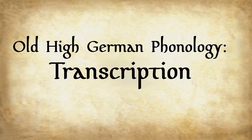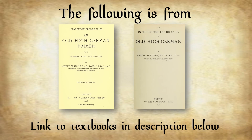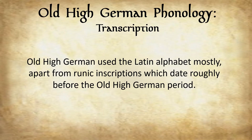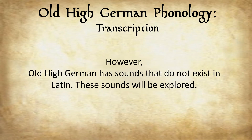Old High German phonology transcription. The following is from 'An Old High German Primer,' second edition by Joseph Wright, and 'An Introduction to the Study of Old High German' by Linel Armitage. Links to these textbooks will be in the description below. Old High German used the Latin alphabet mostly, apart from runic inscriptions from prior to or roughly around the Old High German period. For the most part, our corpus of literature regarding Old High German dialects used the Latin alphabet.